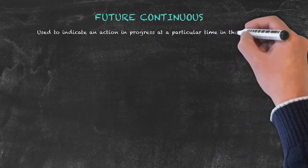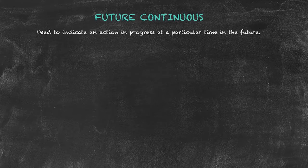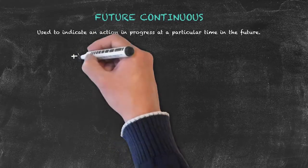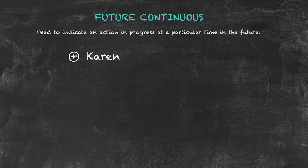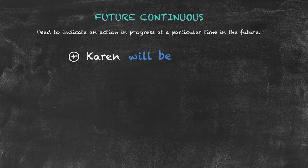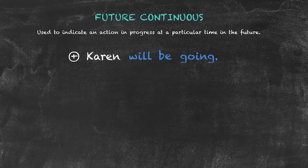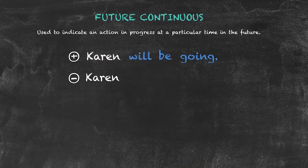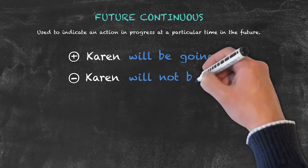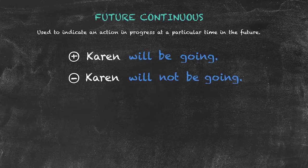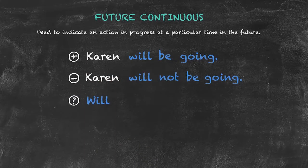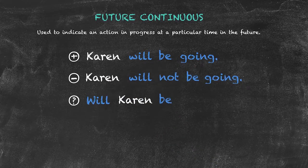Now let's look at the future continuous tense. It is typically used to indicate an action in progress at a particular time in the future. To form the positive, we use our subject — here 'Karen' — then 'will,' then our auxiliary verb 'be,' then the present participle (verb + ing): 'Karen will be going.' For the negative, we add 'not' between 'will' and 'be.' For the question, we begin with 'will,' then the subject, then 'be' and the present participle: 'Will Karen be going?'